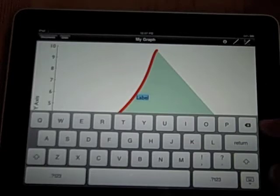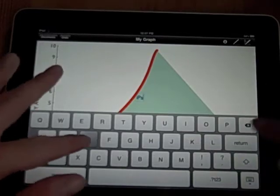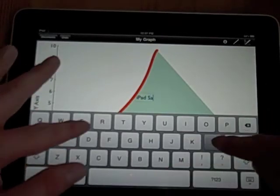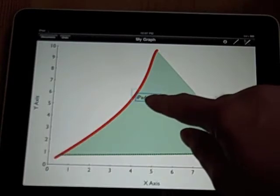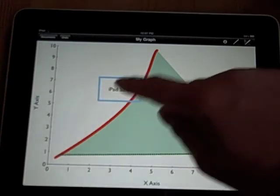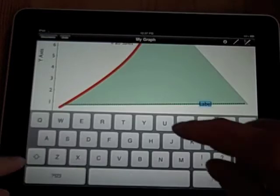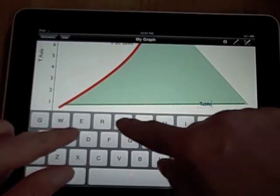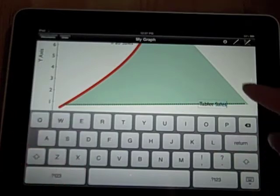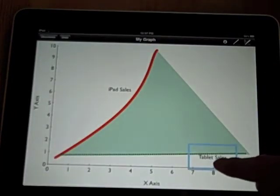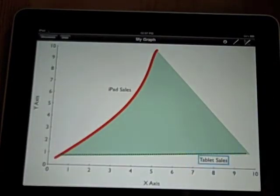If I double tap, I get a label, and I'll type in iPad sales, and I'll tap and hold and I'll move that label over to the left down at the bottom. I'll double tap on that and call it Tablet Sales. Again I'll take this and move it over to the side.